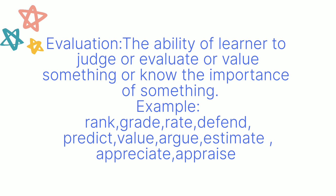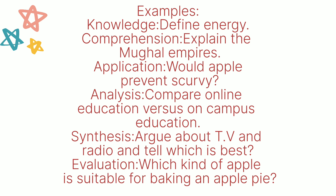Let's briefly discuss them all with examples. For knowledge: define energy. At the second level, comprehension: explain the mobile history. At the third level, application: would an apple prevent scurvy? Next, analysis: compare online education versus on-campus education. Then synthesis: argue about TV and radio and discuss which is best. And at the last level, evaluation: which kind of apple is suitable for baking an apple pie?